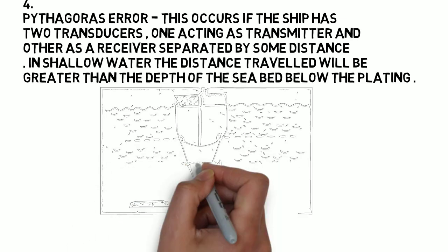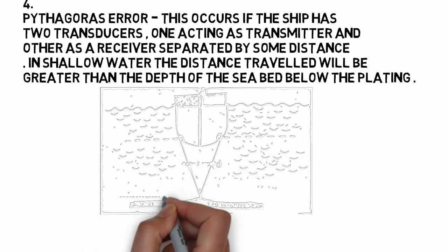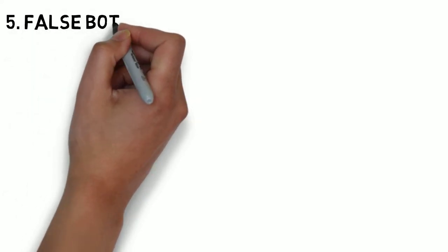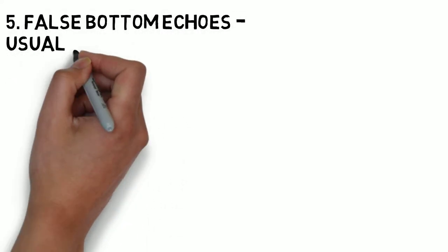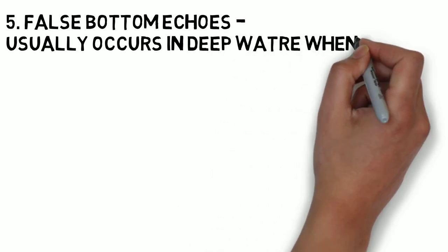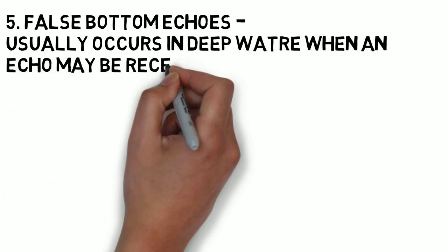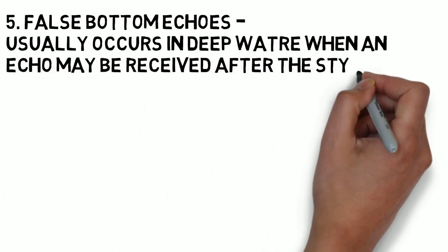The fifth is the false bottom echoes. This usually occurs in deep water when an echo may be received after the stylus has completed one rotation and begun another cycle.